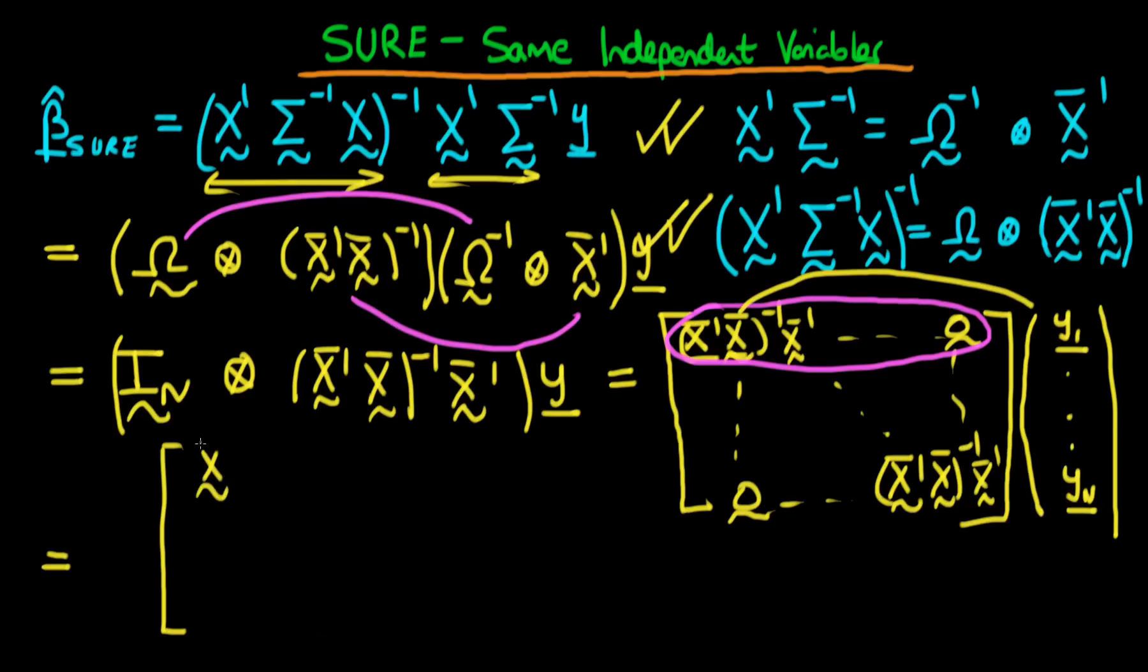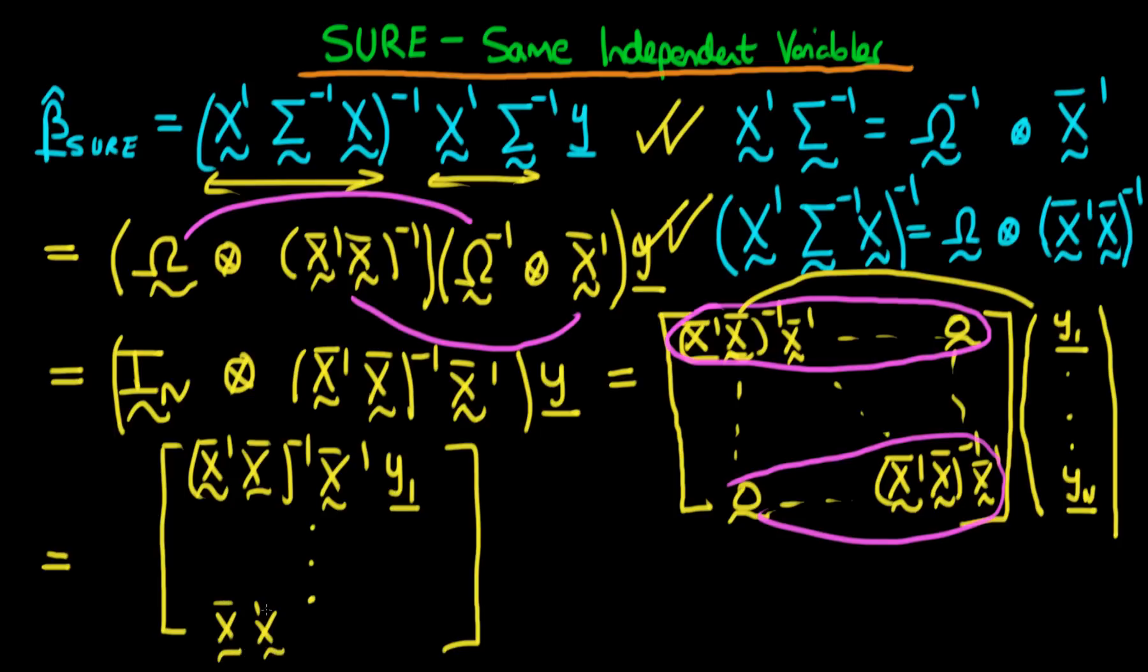And then the second term in our row vector that results at the end is just going to be the same term but it's going to have y2 there. And hopefully you can see that the last term in our row vector is going to be given by the product of this bottom row with the column vector, and the only term which is going to be non-zero is that involving yn. So the last term in our row vector is just going to be equal to x bar primed times x bar all inverted times x bar primed times yn.